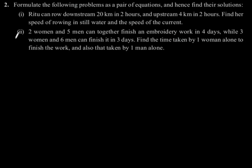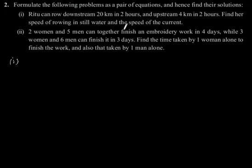Exercise 3.6, Question number 2. Formulate the following problems as a pair of equations and find their solutions. First: Ritu can row downstream 20 km in 2 hours and upstream 4 km in 2 hours. Find her speed of rowing in still water and the speed of the current.